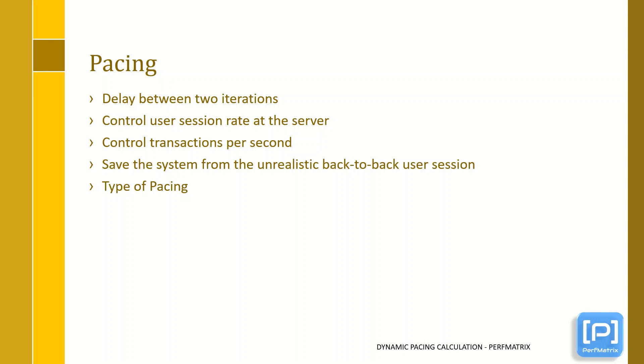First is delay or fixed pacing, in which a fixed period of delay is given between two iterations. And it can be directly calculated by a given formula: number of users divided by iterations per second, subtracted by the sum of iteration response time and total think time.